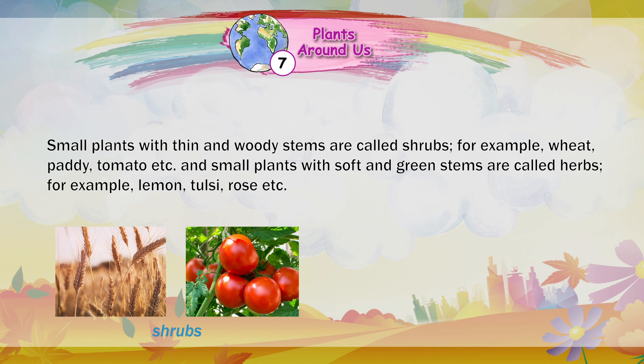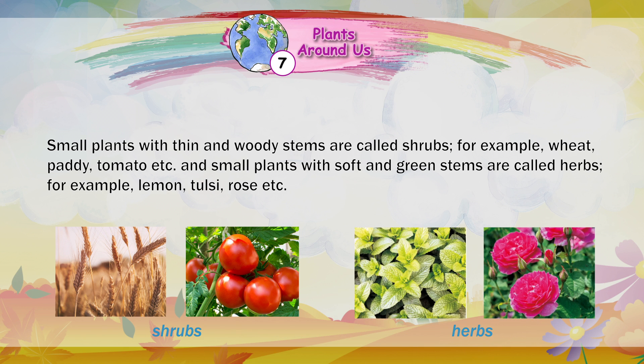Small plants with soft and green stems are called herbs. For example, lemon, tulsi, rose, etc.